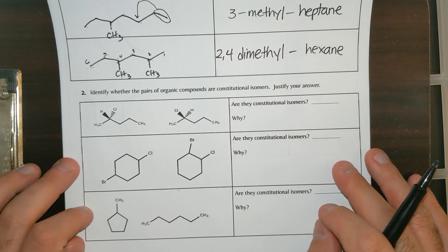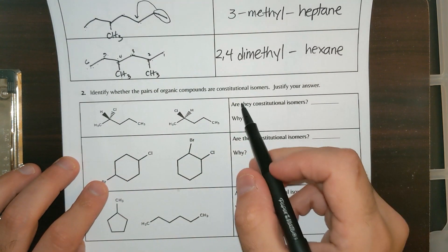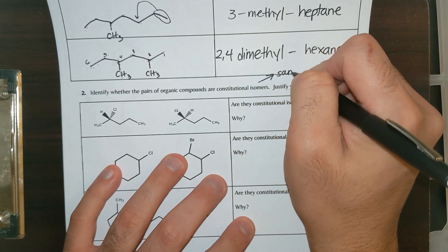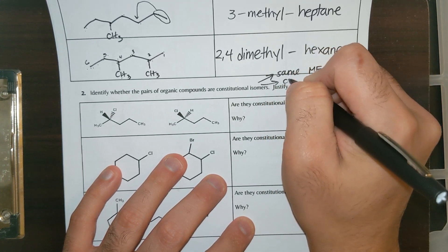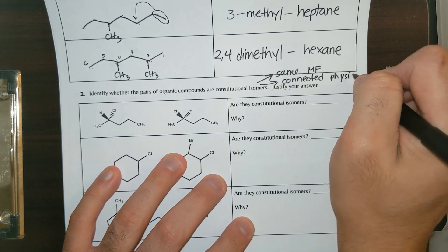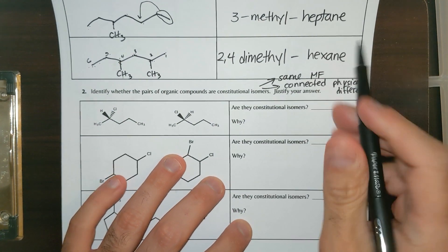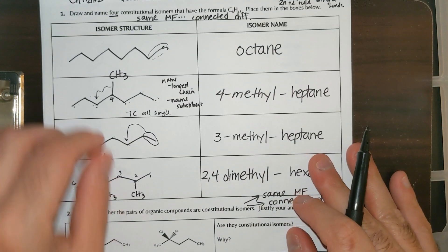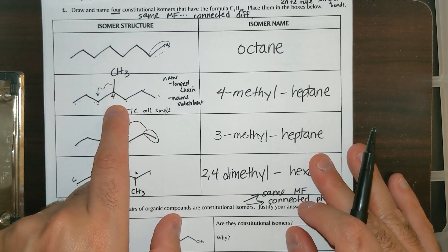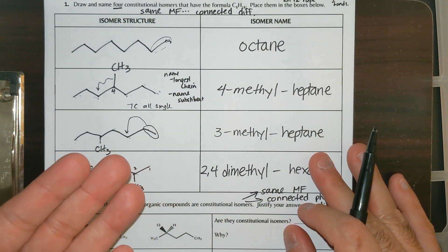The next question gives you a set of structures and asks whether they are constitutional isomers. For a constitutional isomer, the structures must have the same molecular formula but be connected differently. If you just rotated a structure and the methyl group is still on the same carbon, it would not be a constitutional isomer.